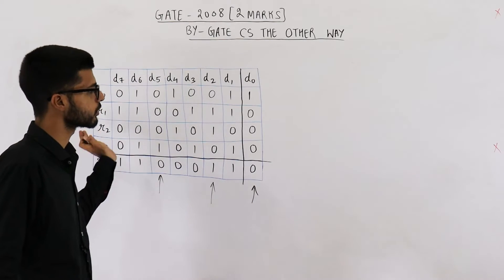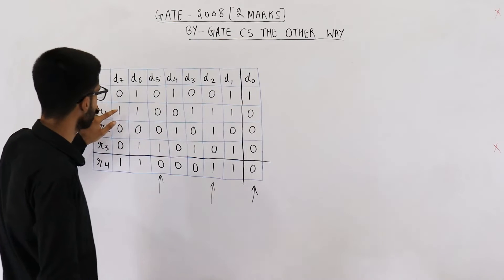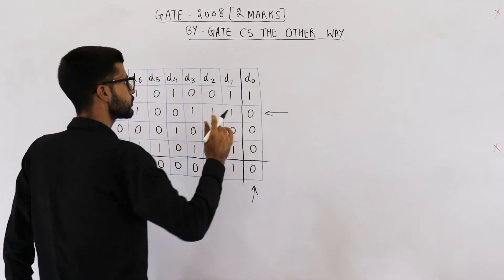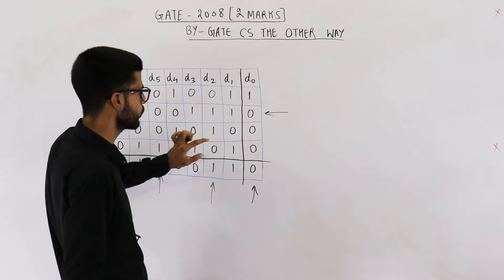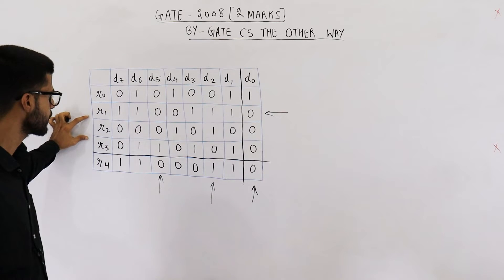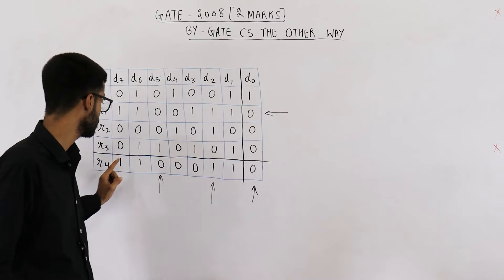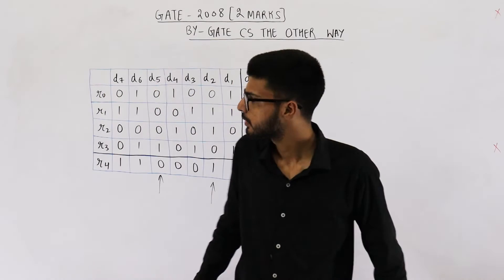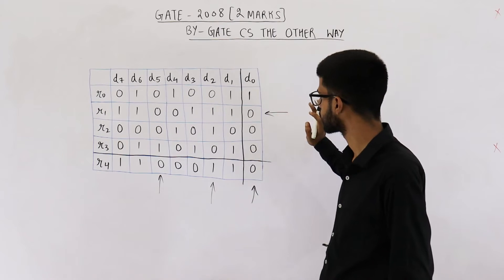Now let's analyze row-wise. In R0 we have four ones — acceptable. In R1 we have five ones — five is odd, so there is surely an error in R1. In R2 we have two ones — two is even, so we cannot say anything about R2; there may or may not be an error. R3 and R4 both have four ones — acceptable. So we are certain there is an error in R1.